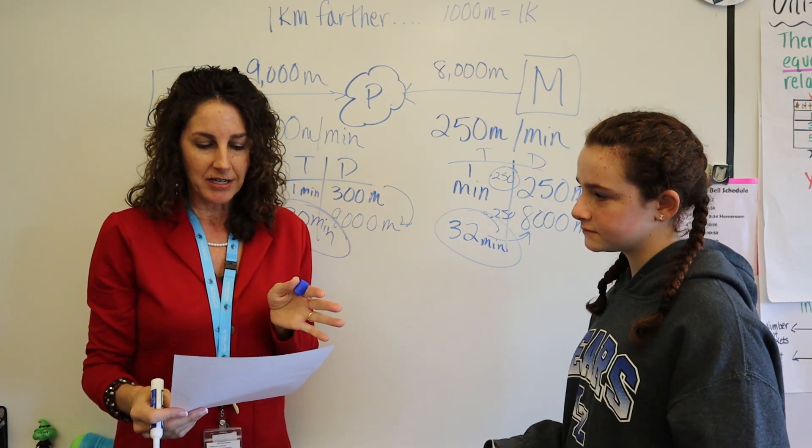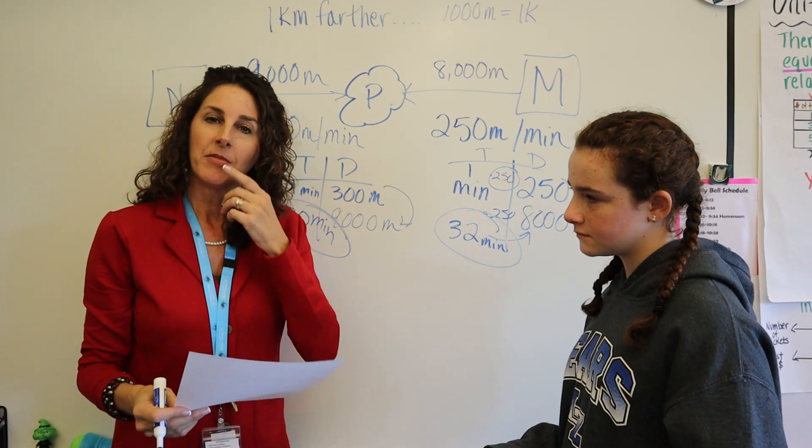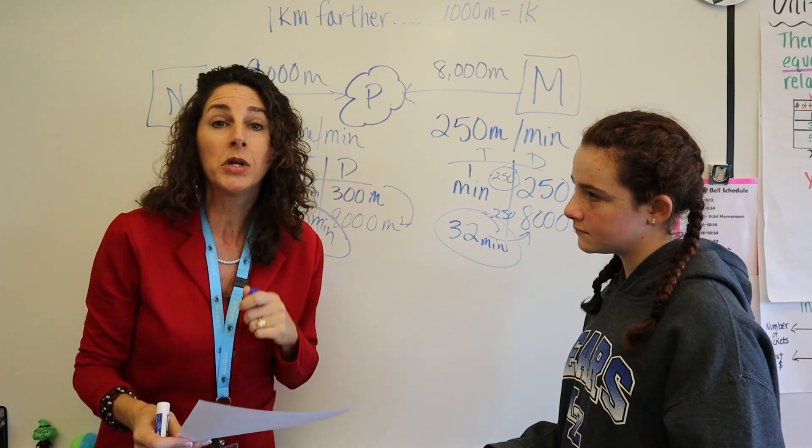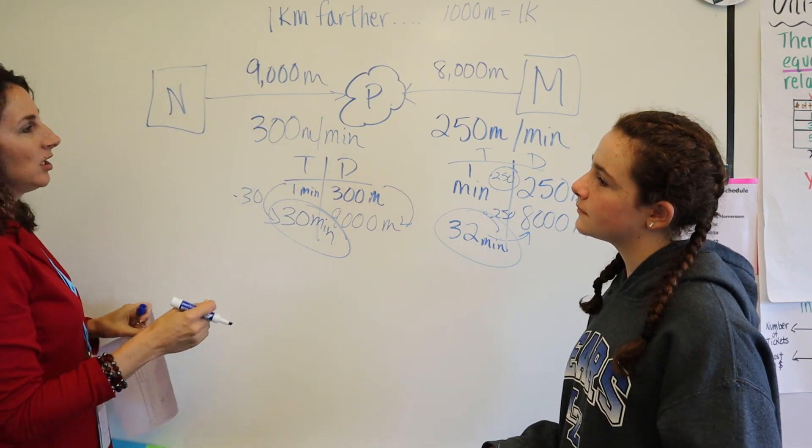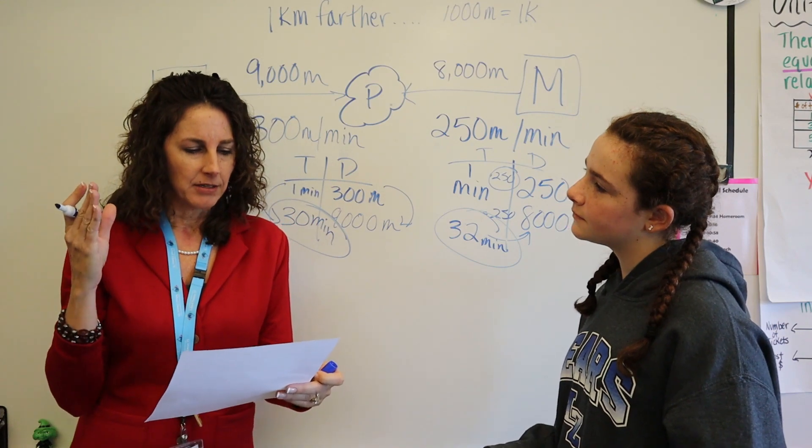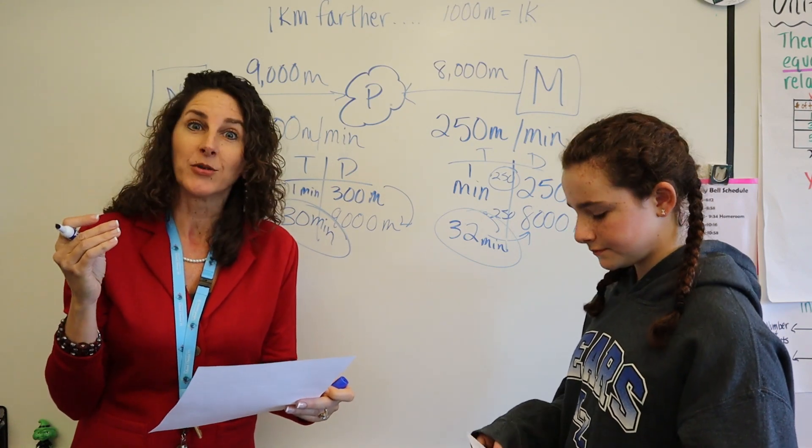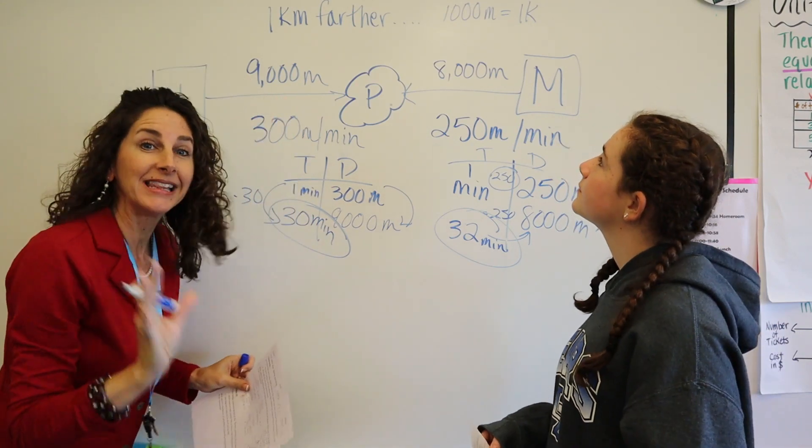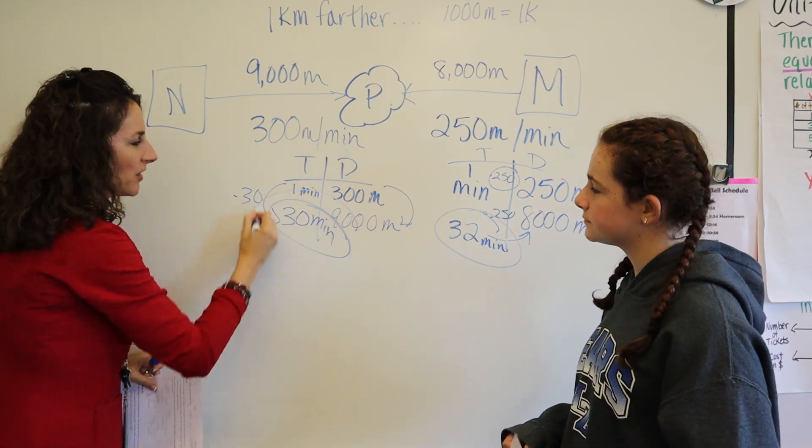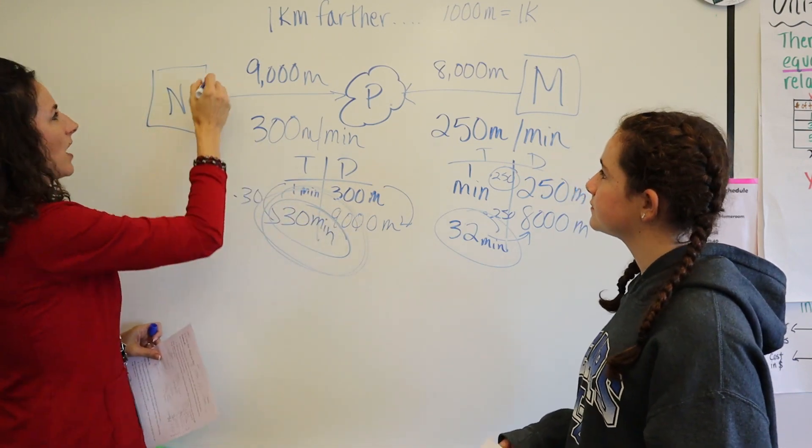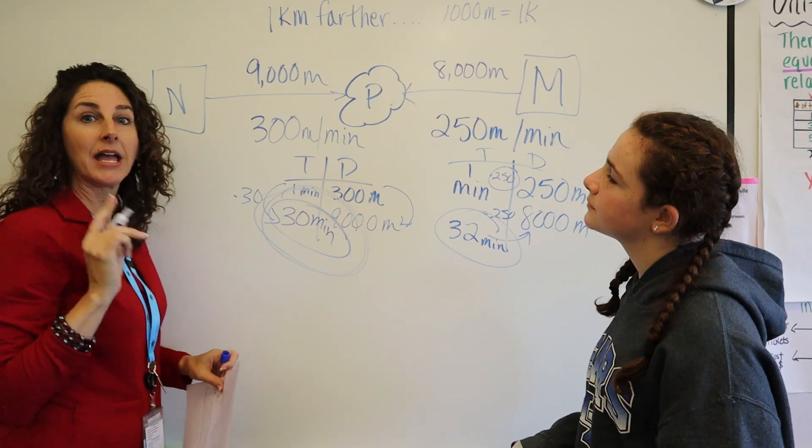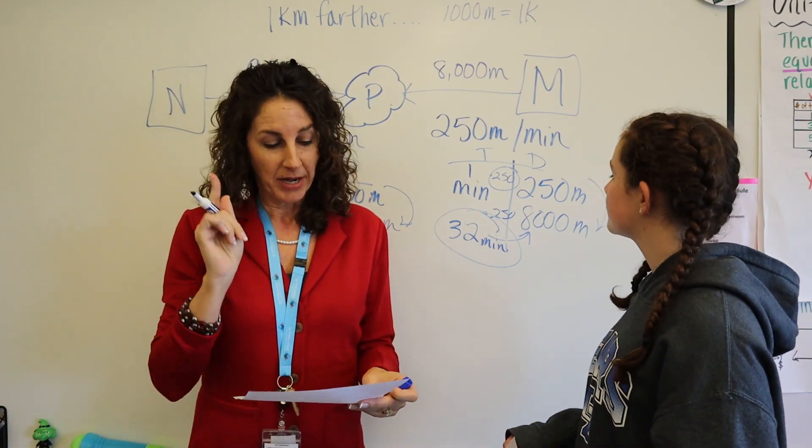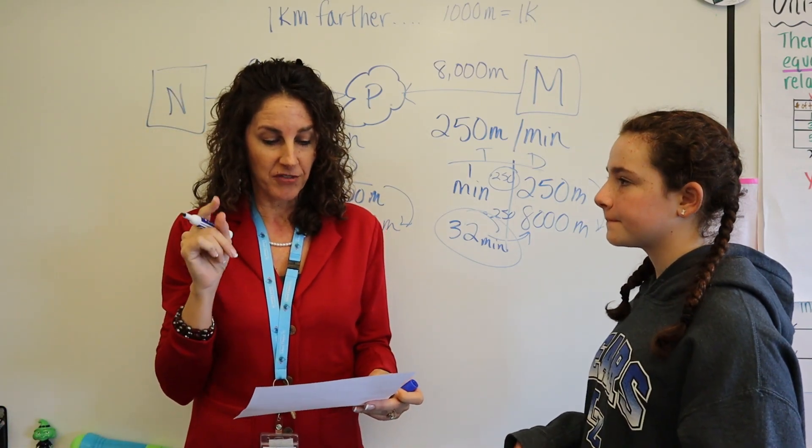For each person, write an equation that relates distance and time. Okay, I didn't do that yet. Who will arrive at the park first? Well, did they leave at the same time? Let me reread it. Mai and Noah each leave their house at the same time. Okay, so if they leave at the same time, the lower time is 30 minutes. So I'm going to say that Noah arrived first. But I still have work to do because I haven't solved the equation.